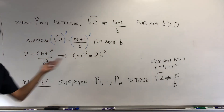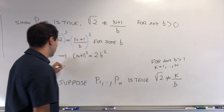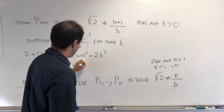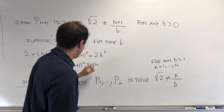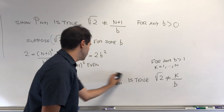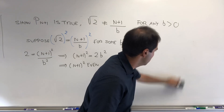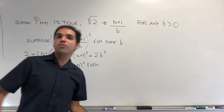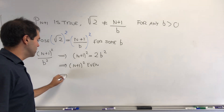In particular, that tells you that (n+1)² is even, and therefore n+1 is even—because if a number is odd, its square is odd, so by contrapositive: if the square of a number is even, that number is even.